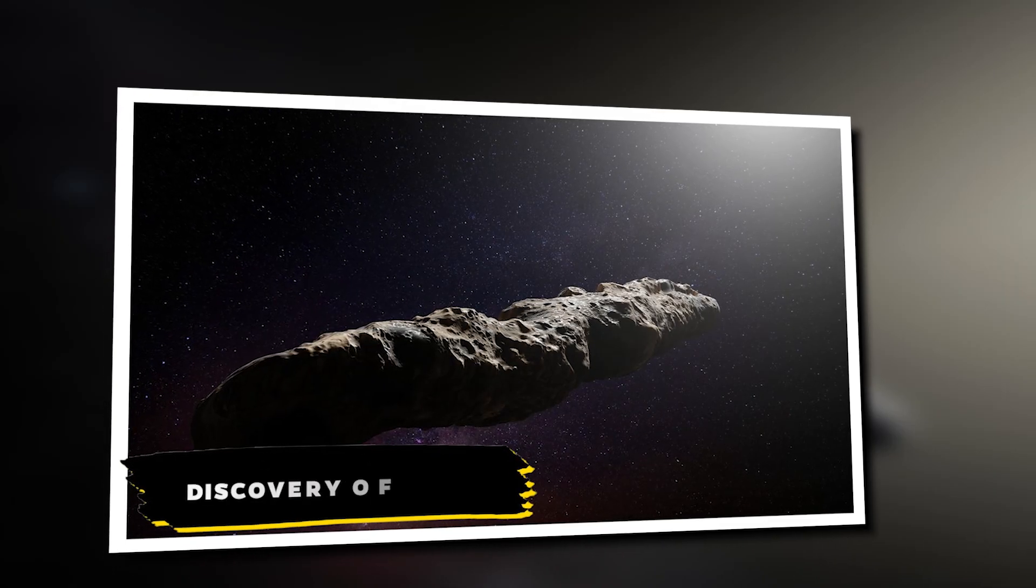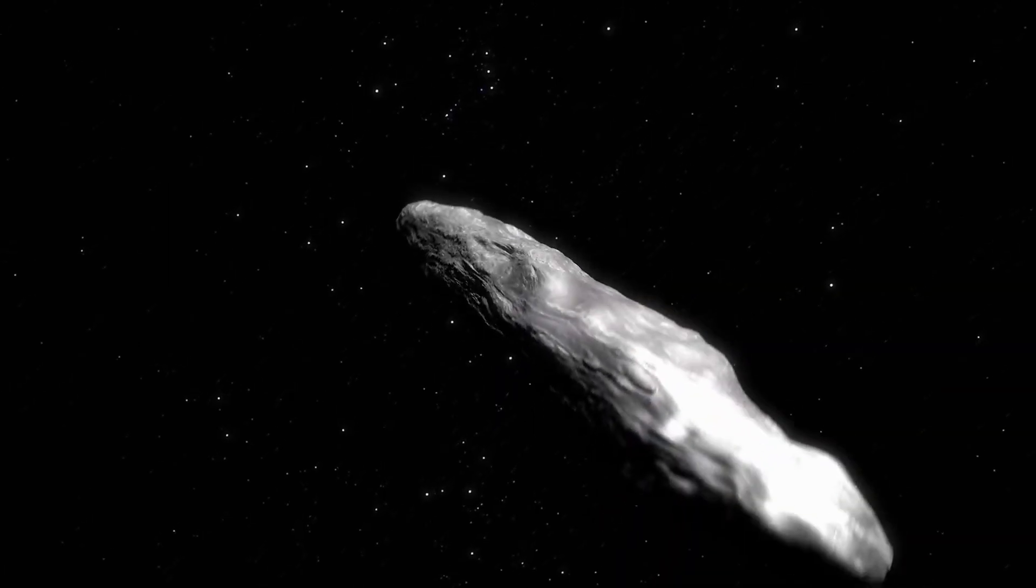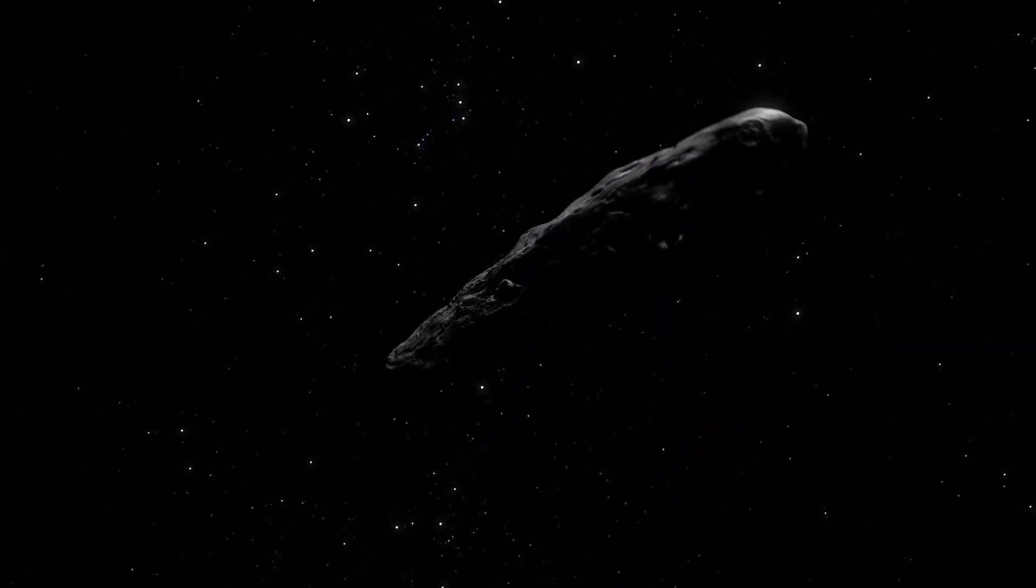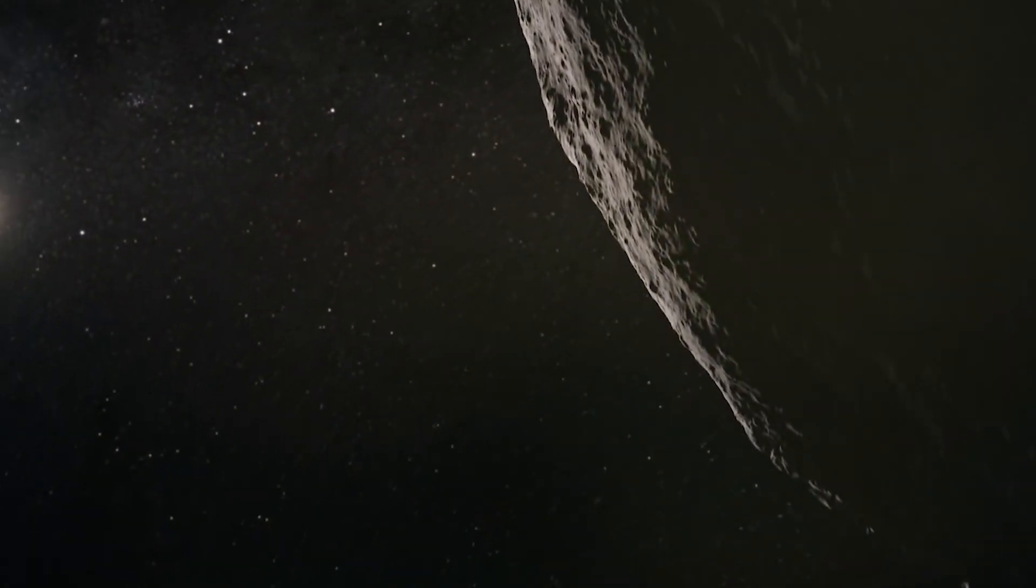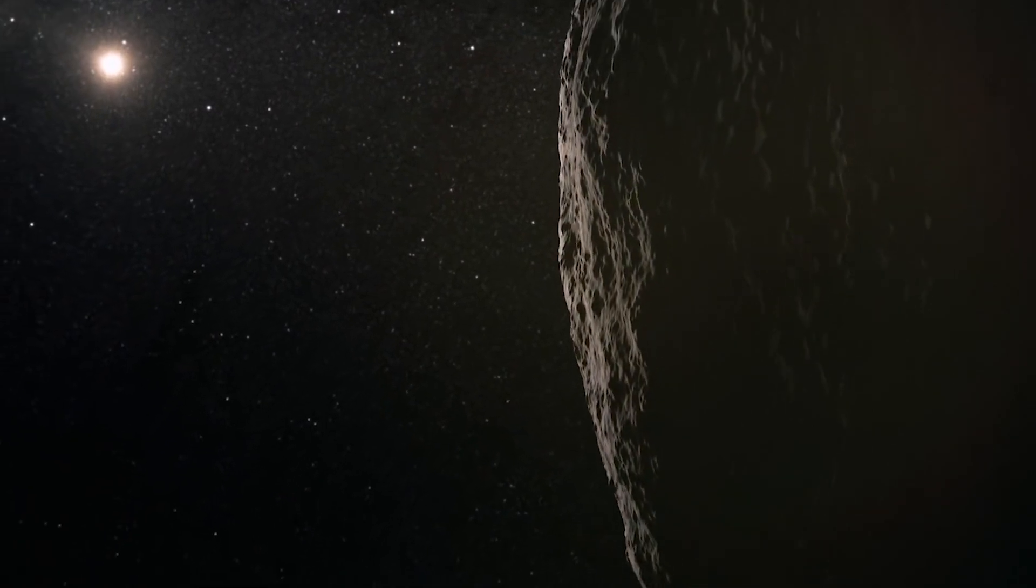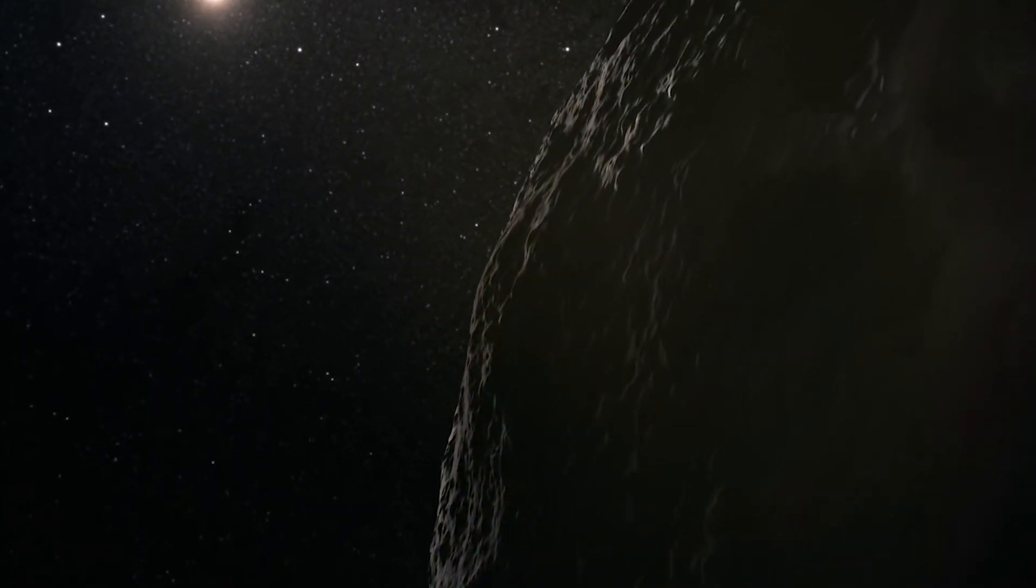Discovery of Oumuamua. On October 19, 2017, a mysterious object named Oumuamua burst onto the scene, racing through our solar system. This cosmic traveler had been journeying for over a century before we even knew it existed.